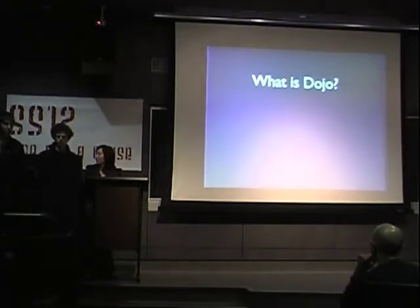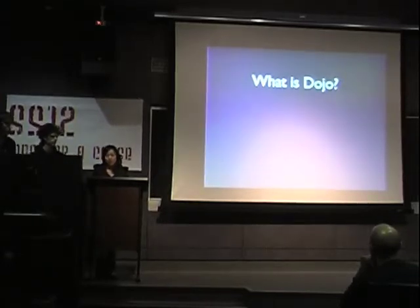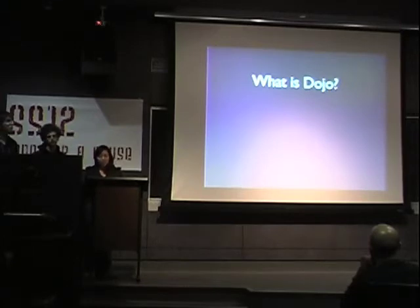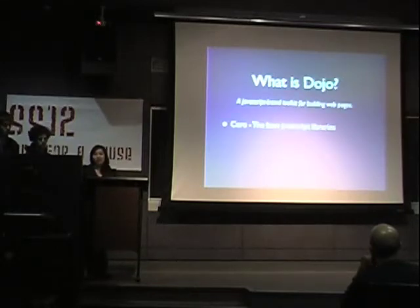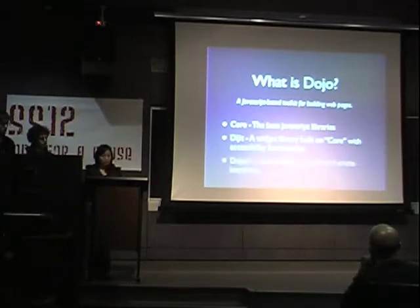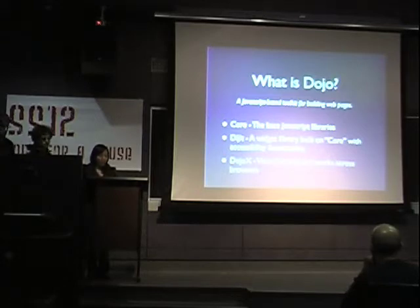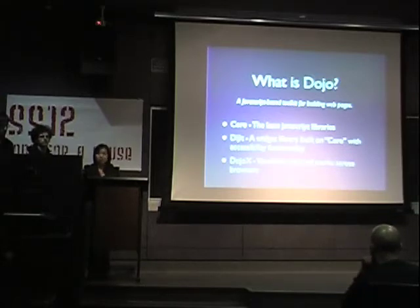So, since we're the Dojo team, we'll probably be good to talk about what Dojo is, and Leslie's going to do that. What is Dojo? Dojo is an open source DHTML toolkit written in JavaScript. It has three different layers: the Dojo Core, Dijit, and DojoX. The Dojo Core is the base JavaScript library that provides standard functionality. Dijit is the widget library built on top of the Dojo Core that provides accessibility functionality, and DojoX allows for the visualization of data across different browsers.